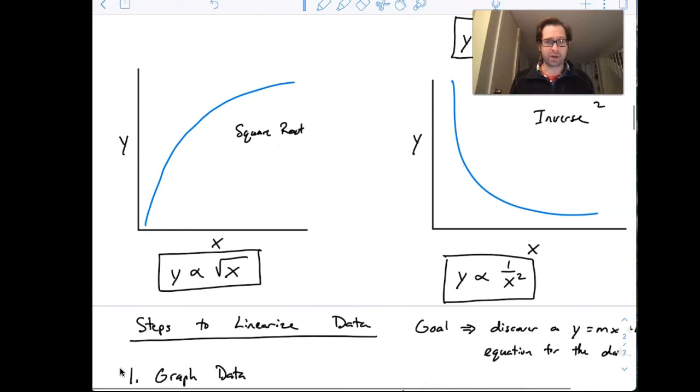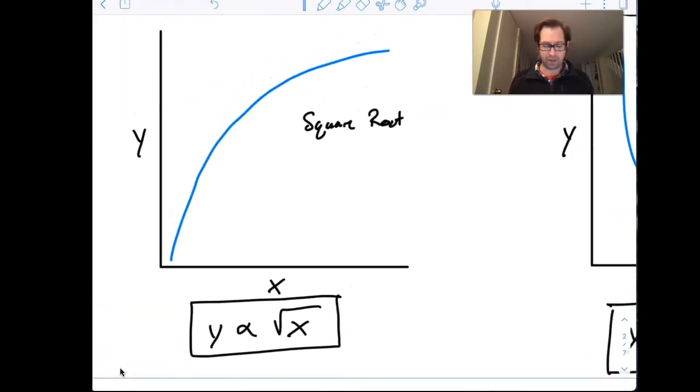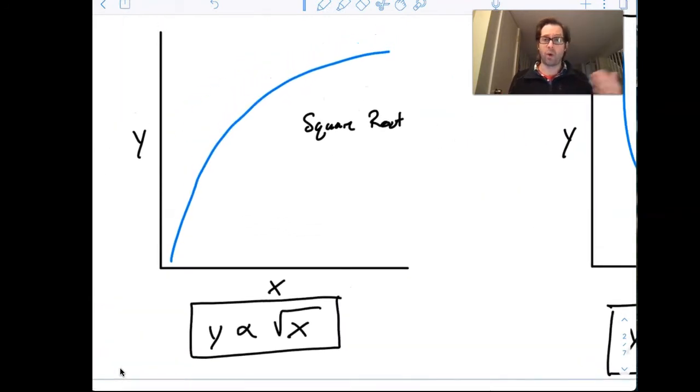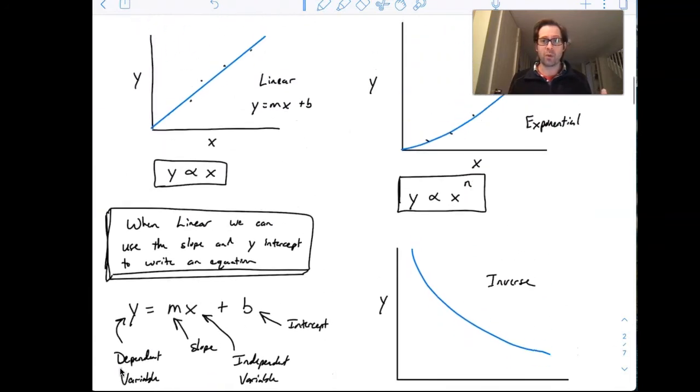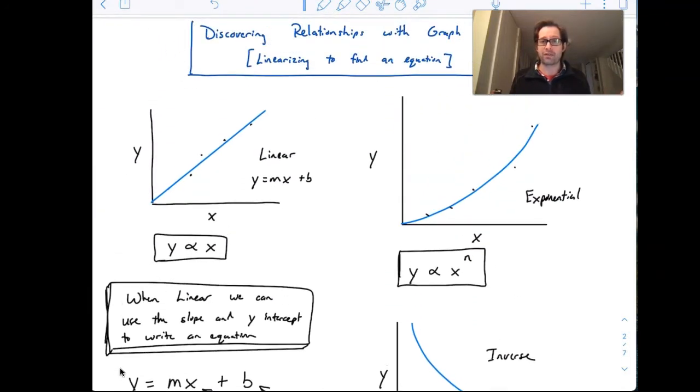And then the last thing is a square root relationship. So if we take a look at this, y being proportional to the square root of x. So as the x values increase, the y values do increase for a little bit, but then they taper off the rate that they're increasing. So they're still increasing, but they're not increasing as much. So with these five basic types of relationships, we can in physics describe most of the things that happen in our physical world. We just need to discover what relationship best matches the data that you are collecting in your experiments.